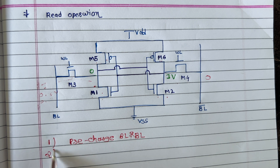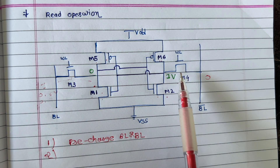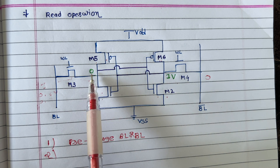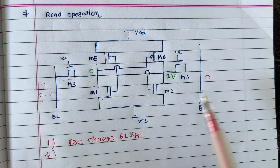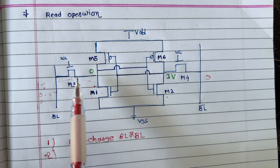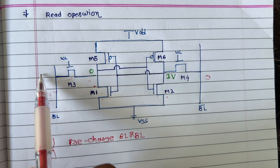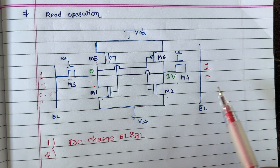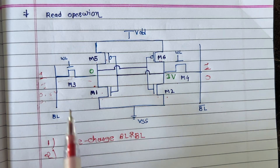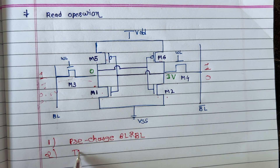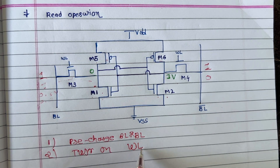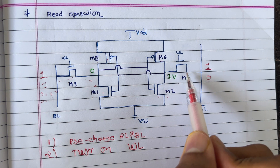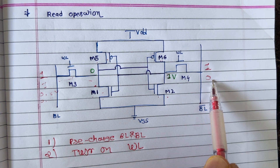The second step is to turn on the word line. Let's assume 0 is here and 1 is here — we want to read this 0 and read this 1. As soon as we turn on the word line, since we pre-charged bitline and bitline bar, both are at 1. So here 1 volt is present and another 1 volt is there. There is no transition because both have the same potential.